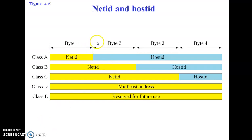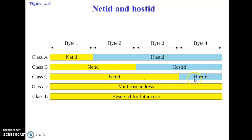A very important point is NetID (network ID) and the host ID. NetID indicates the number of bits given to identify the network, and host ID is the number of bits given to identify the host for that network. In Class A, only one byte is reserved for network ID and three bytes are given for host ID. For Class B, two bytes are reserved for NetID and two bytes for host ID. For Class C, the first three bytes are for network ID and the last byte for host ID. Class D is reserved for multicast (group) addresses, and Class E is reserved for future use.